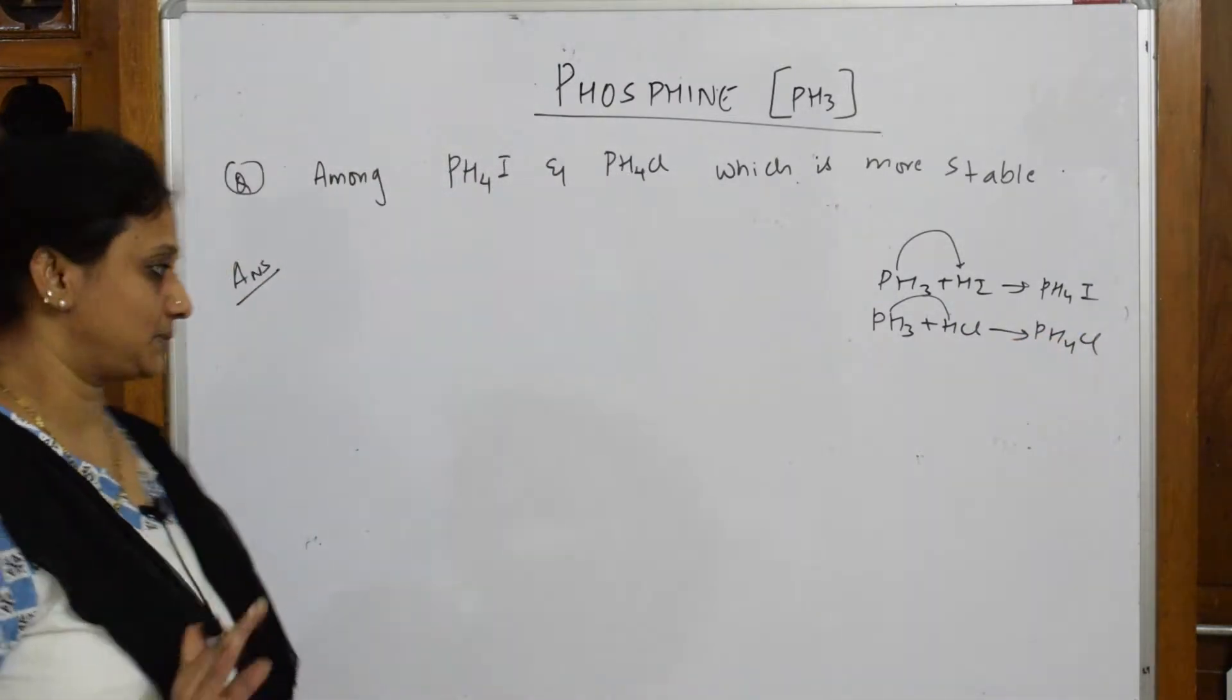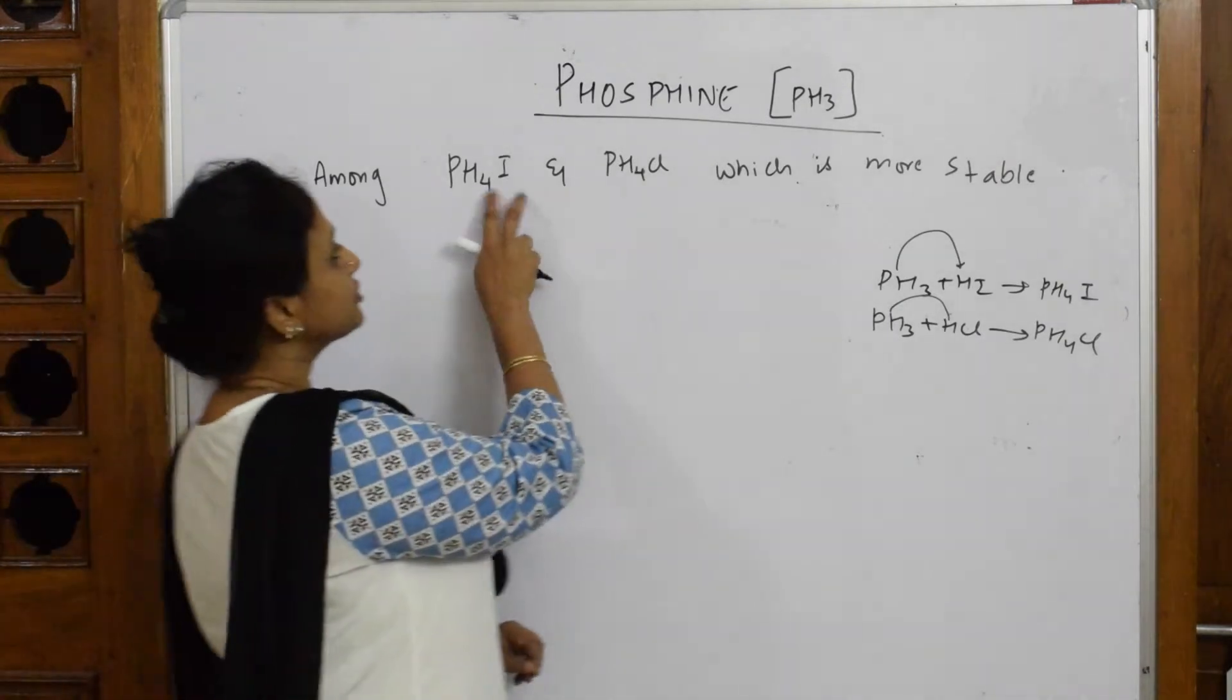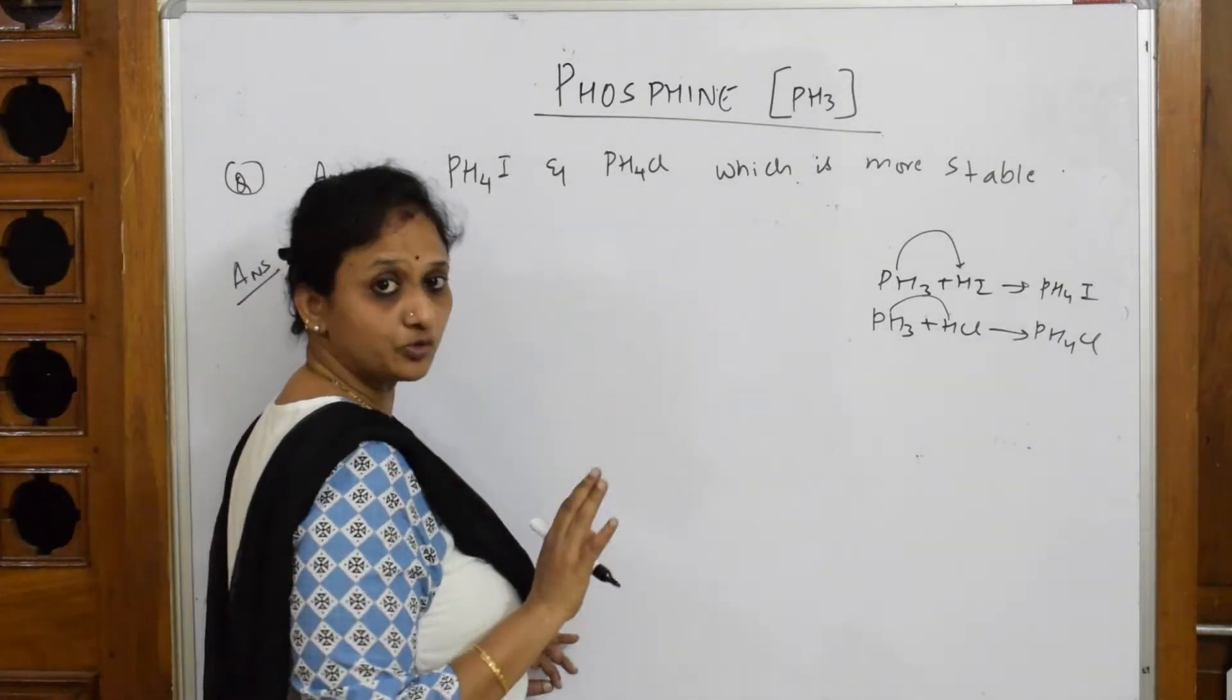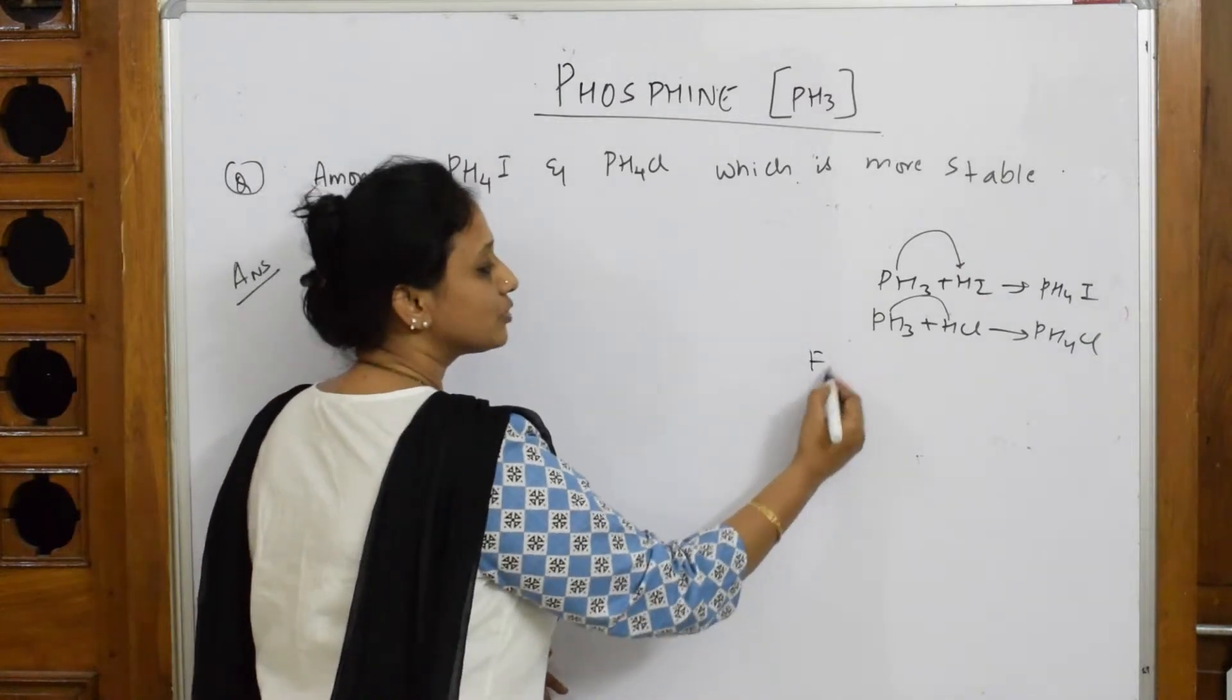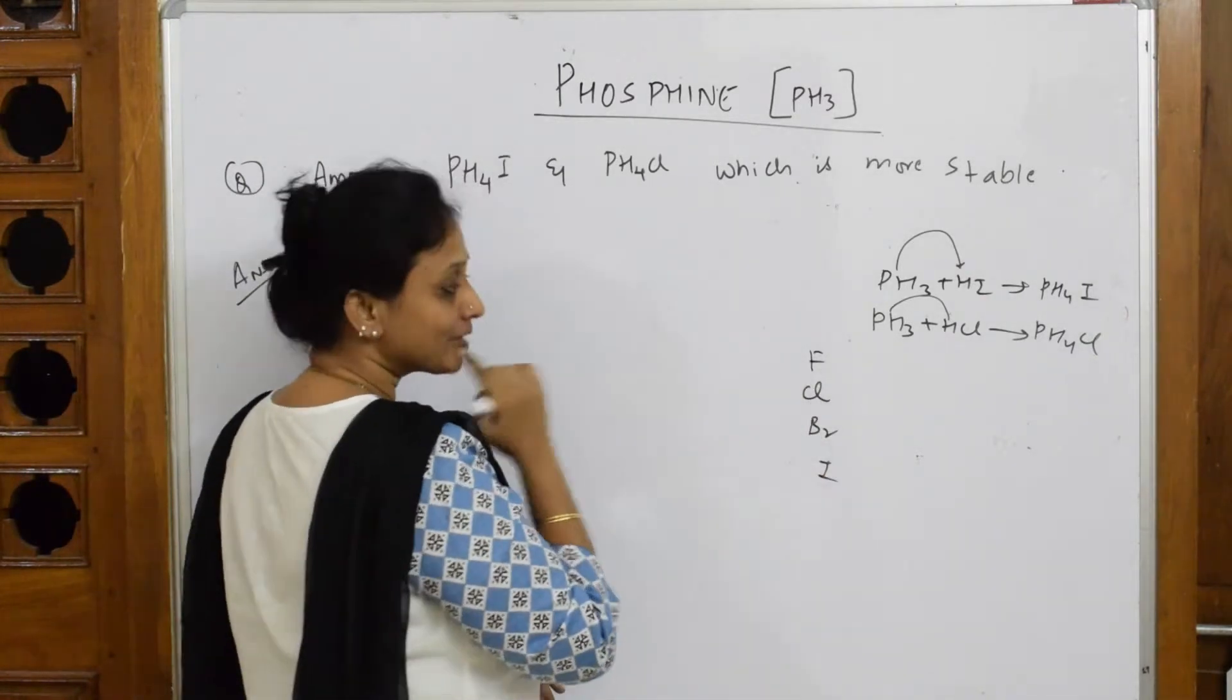Let's come back and see now what is the difference. For PH₄, phosphonium ion is common. What difference is I and Cl? Start writing: fluorine, chlorine, bromine, iodine.